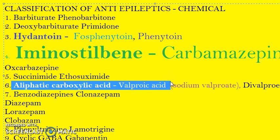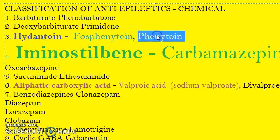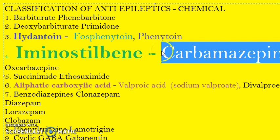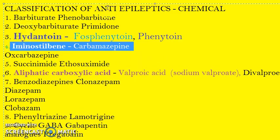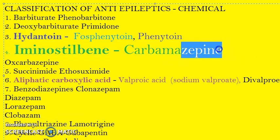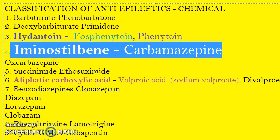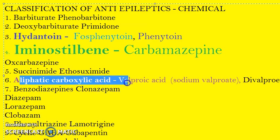Quick recap: hydantoin — fosphenytoin is the prodrug, phenytoin is the active metabolite, also called diphenyl hydantoin. Iminostilbene — carbamazepine. Don't confuse carbamazepine with a benzodiazepine just because of the '-zepine' suffix — it is an iminostilbene and the first line drug for epilepsy. Aliphatic carboxylic acid — valproic acid, for myoclonic seizures and absence seizures.